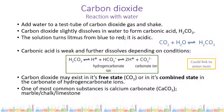Carbonic acid further dissolves in water depending on conditions. It can produce the hydrogen carbonate ion when only one hydrogen ion is released, or if both hydrogen ions are removed, the carbonate ion is produced. So in water, CO2 dissolves to give carbonic acid, which leads to some hydrogen carbonate ion and some carbonate ion as the hydrogen carbonate further dissolves.